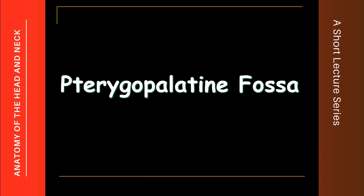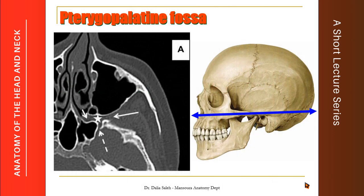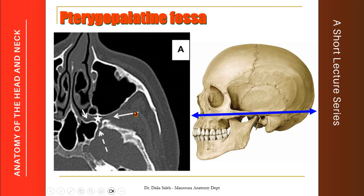Let's first start with the anatomy of the pterygopalatine fossa. To start, let's take a cross section at the level of the normal axis. We can see here the nose, the maxilla, the zygomatic bone, and the zygomatic arch. This is the mandible. Deep to the zygomatic arch lies this region, deep to the mandible — the infratemporal fossa. So, if we look at this CT picture of the cross section of the skull at the level of the zygomatic arch: this is the zygomatic arch, this is the zygomatic bone, this is the maxilla containing the maxillary air sinus, and this is the nasal cavity. Deep to the zygomatic arch, we can see this space, which is the infratemporal fossa, where the arrow lies here.